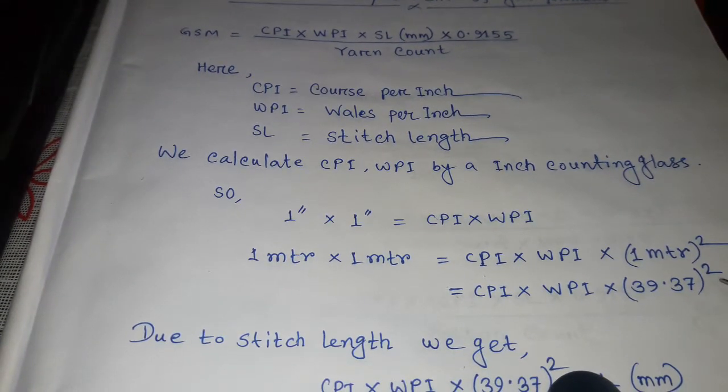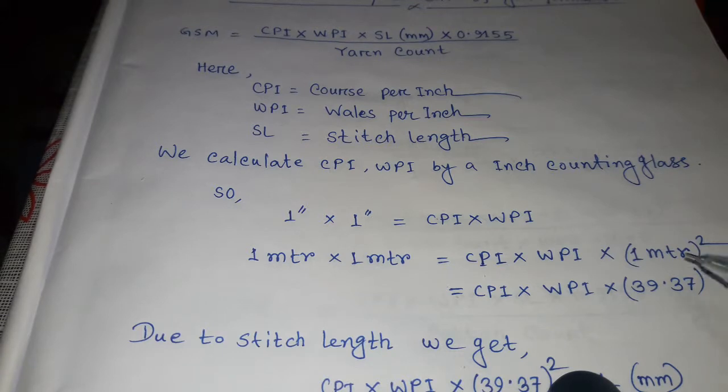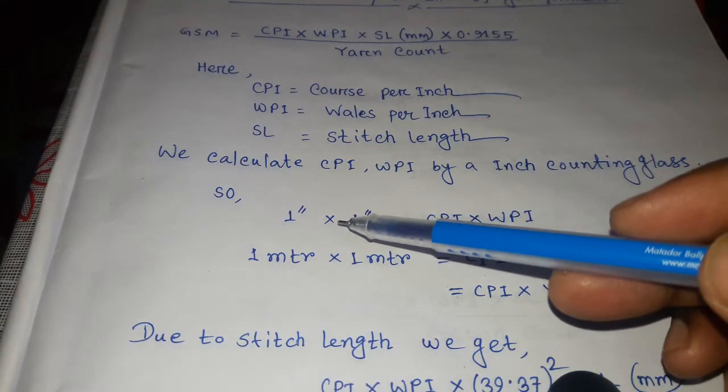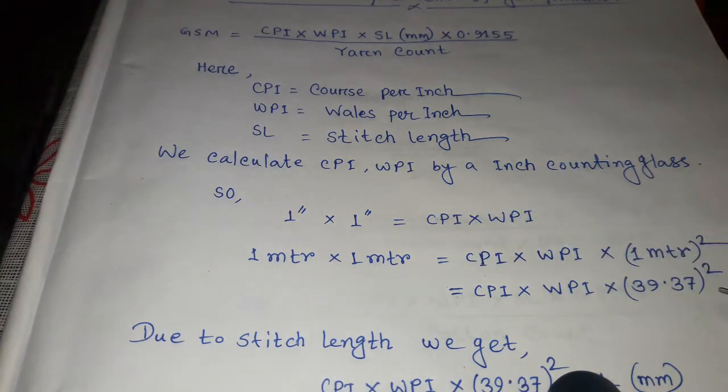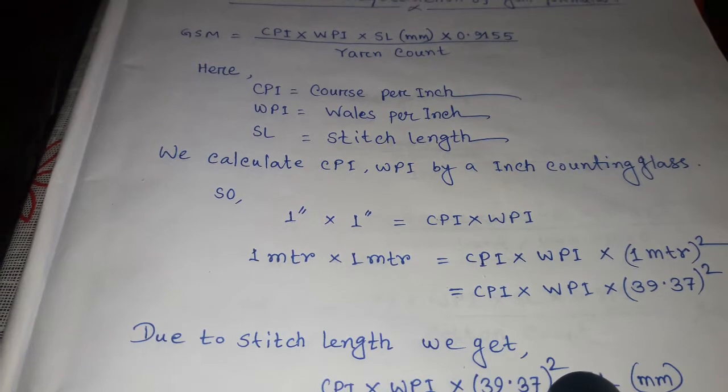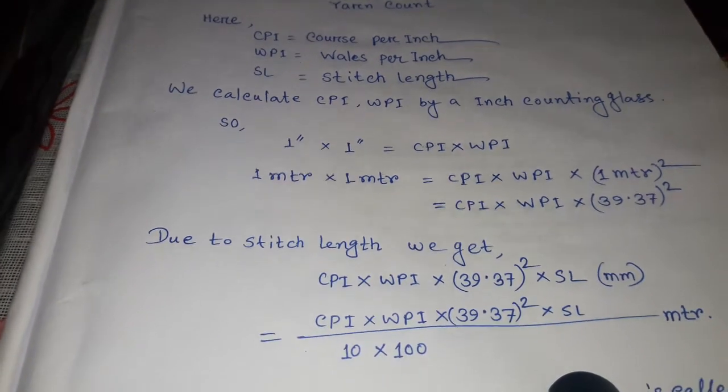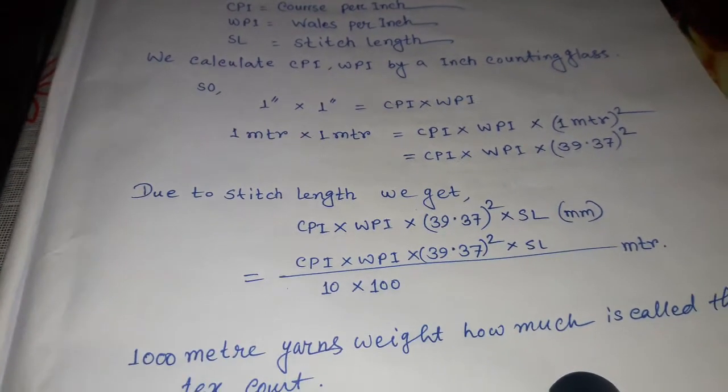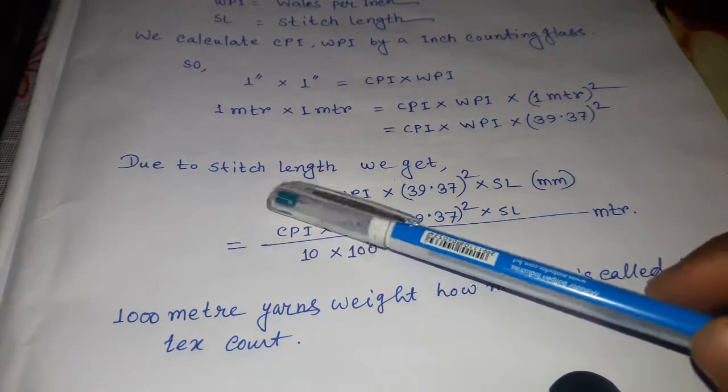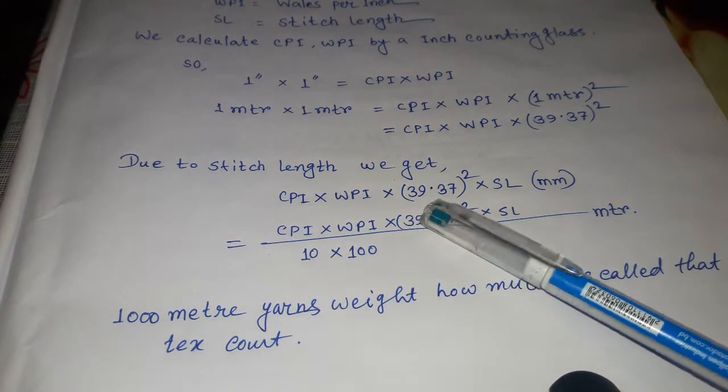We have calculated it in inches because we calculate CPI and WPI using a one-inch counting glass. Due to stitch length, we get CPI times WPI times 39.37 squared.